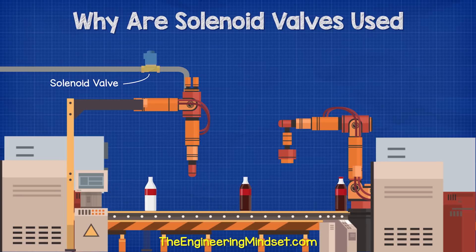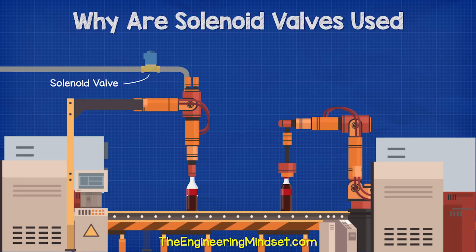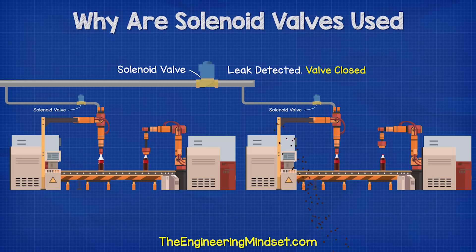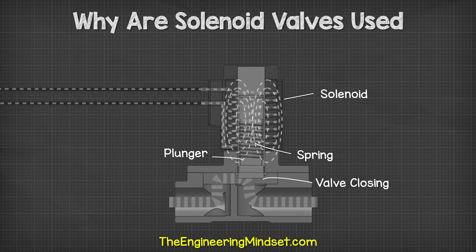In industrial applications, we can use these valves to precisely control the flow and mixing of fluids — for example, to pour a perfect amount of fizzy drink into a bottle on a production line. We might also find solenoid valves being used in a production line to detect and prevent leaks. If a sensor detects a leak from the pipework, then a controller will tell the solenoid valve to close to shut that part of the production line off and prevent product being wasted, and also protect the manufacturing equipment until engineers can get there and fix it.